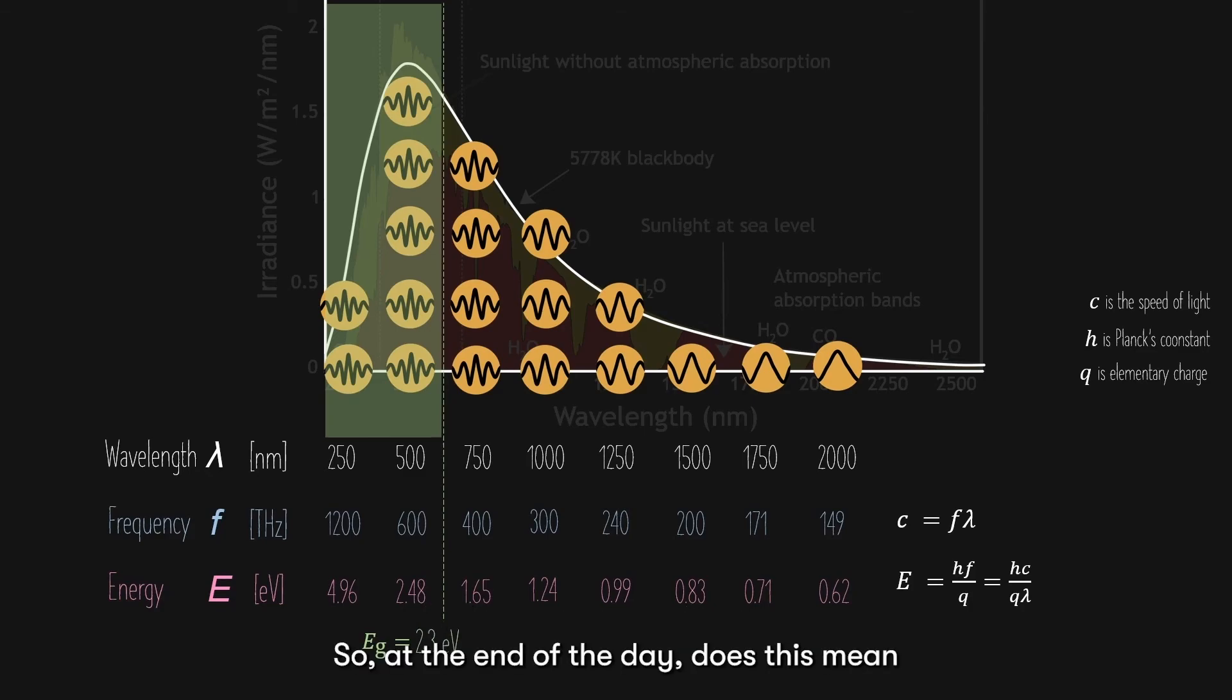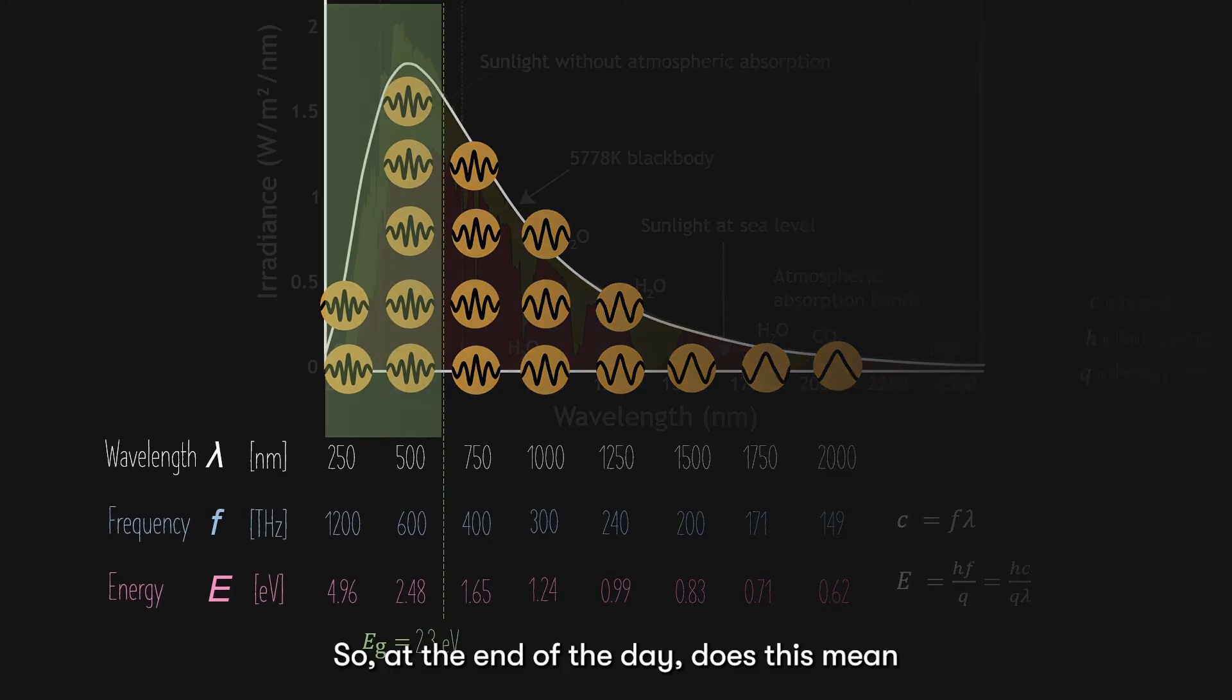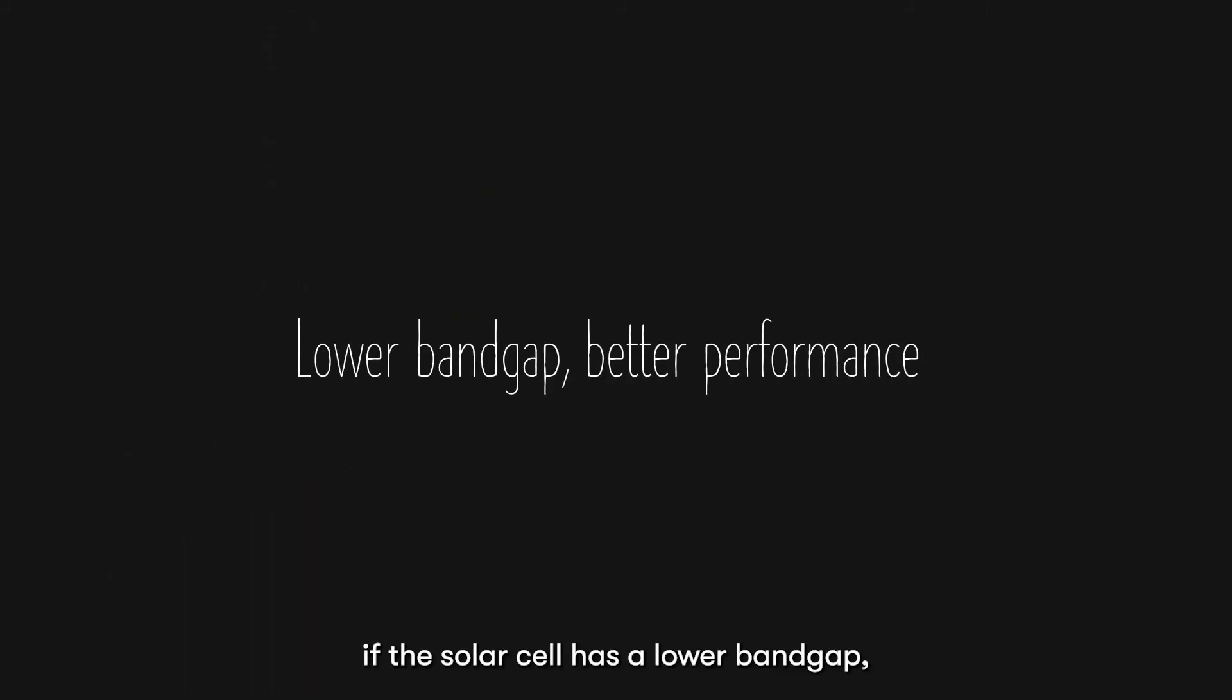So, at the end of the day, does this mean if the solar cell has a lower energy band gap, it will perform better? Well, not quite true. This is a whole other chapter. I'll save this explanation for the next chapter.